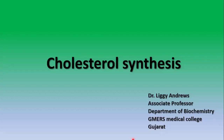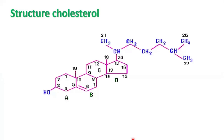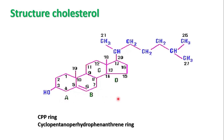Students, today I am going to talk on cholesterol synthesis. First let's see the structure of cholesterol. Cholesterol is exclusively found in animals and not in plants. It is a complex lipid, a major sterol in humans, and it has a steroid nucleus. This steroid nucleus is also called the CPP ring.